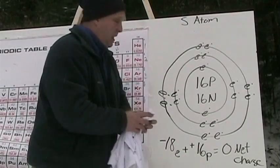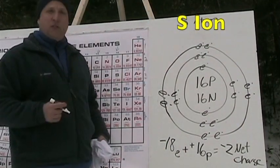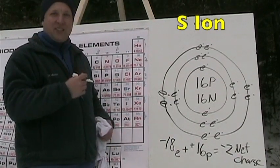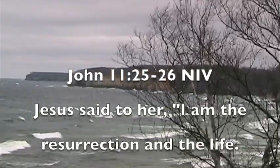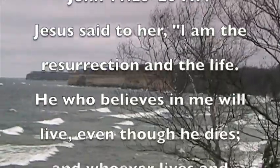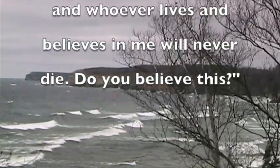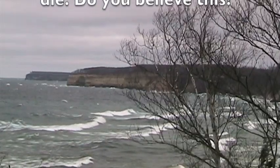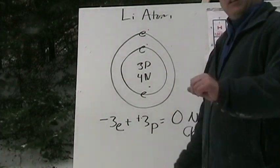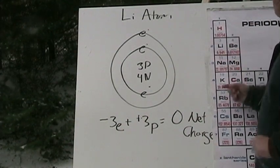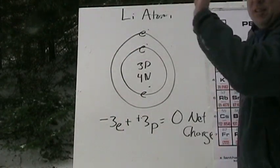Negative eighteen plus positive sixteen equals a negative two net charge. So the sulfur ion will typically have a negative two net charge. Right receives electrons. Now let's talk about the lithium atom. Lithium is on the left-hand side of the periodic table — left loses electrons and an energy shell.